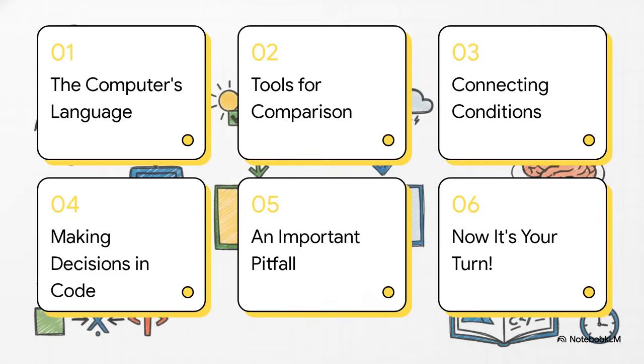So here's our game plan for today. We're going to kick things off by learning the computer's super simple yes or no language. Then we'll get our hands on the tools for comparing things and connecting different ideas. After that, we'll build some actual decision-making code. I'll show you a classic trap to avoid. And then it's going to be your turn to give it a shot.